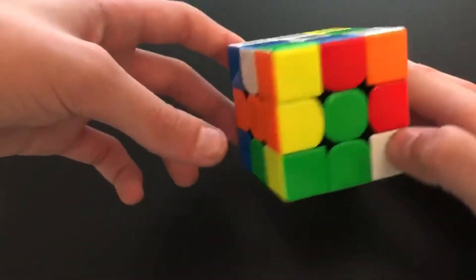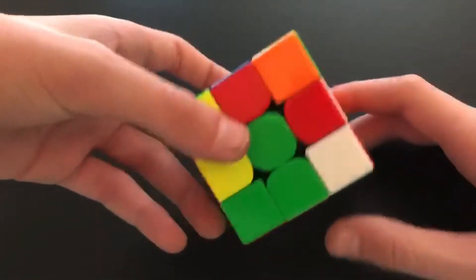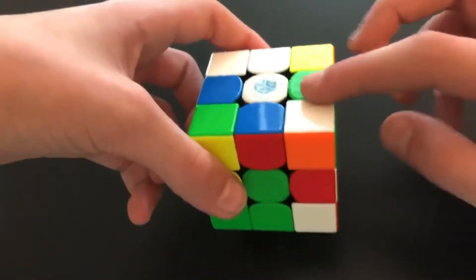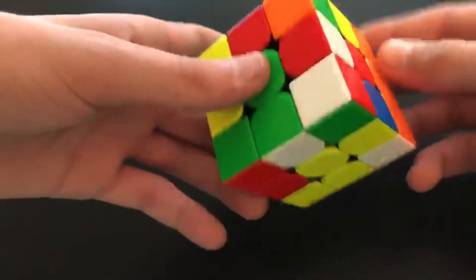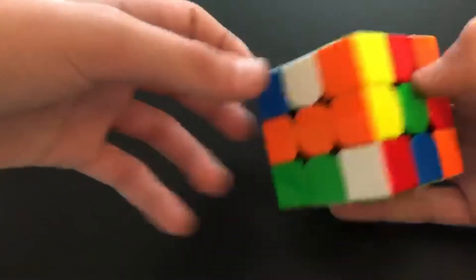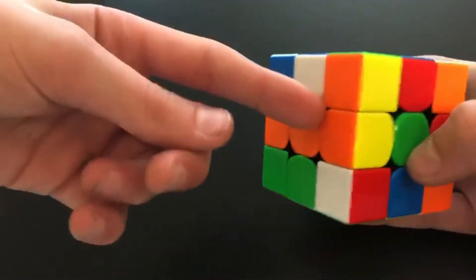So the first scramble, this was the first solve of the day actually. I see the yellow cross. So these two edges, this edge, this edge, so I do a D prime to set up the orange, and then I set up the red, and then I insert the orange.